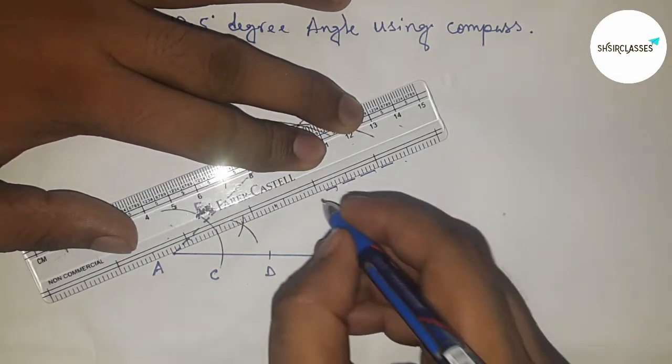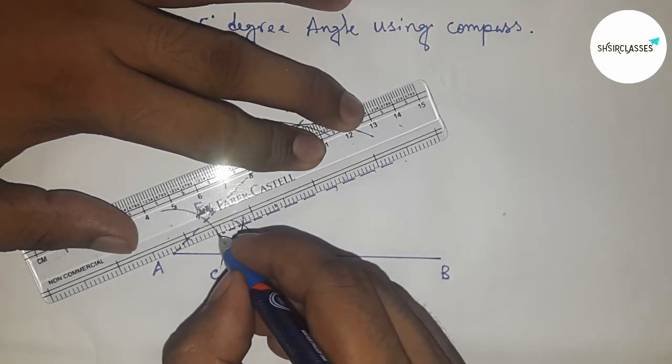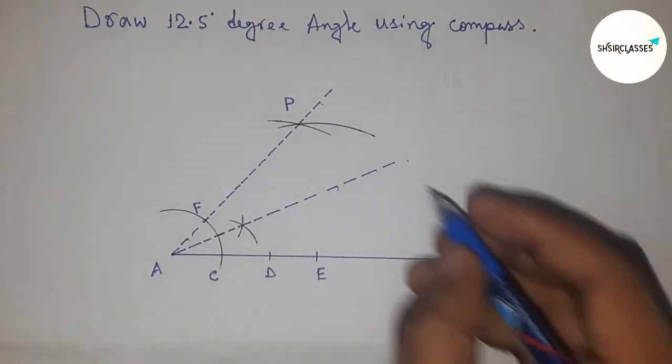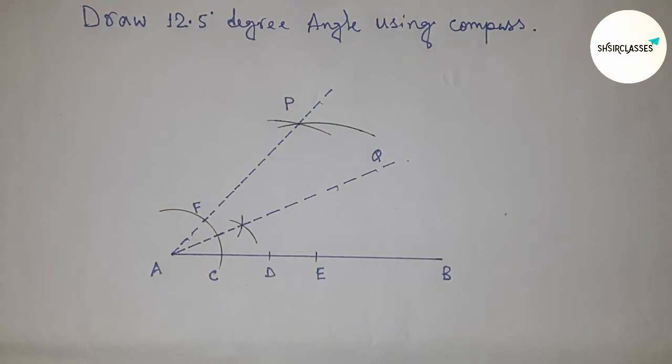This gives us the 25 degree angle. Joining this, we get point Q, so angle QAB is 25 degrees.